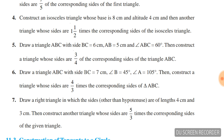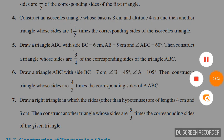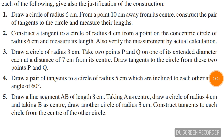Draw a circle of radius 6 cm. From a point 10 cm away from its center, construct the pair of tangents to the circle and measure their length.